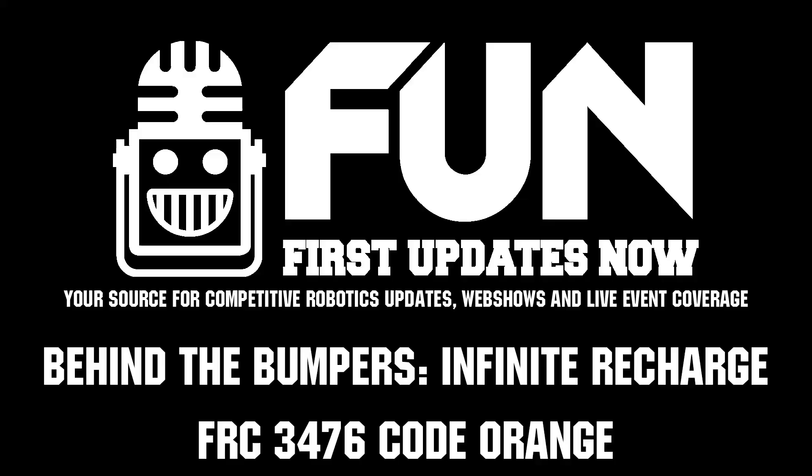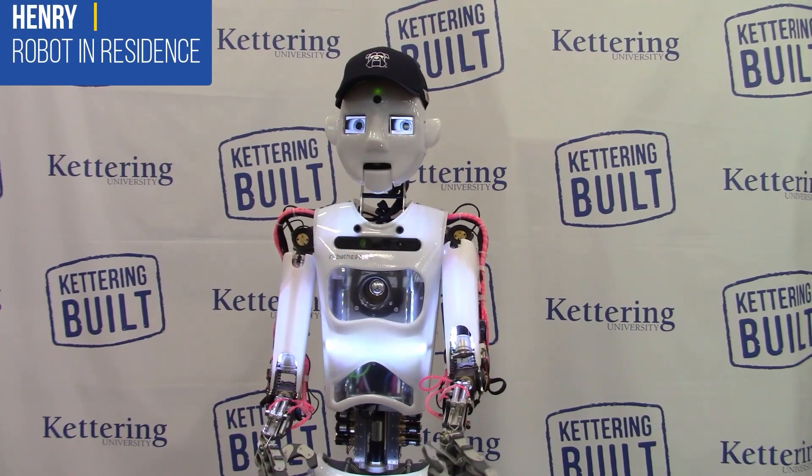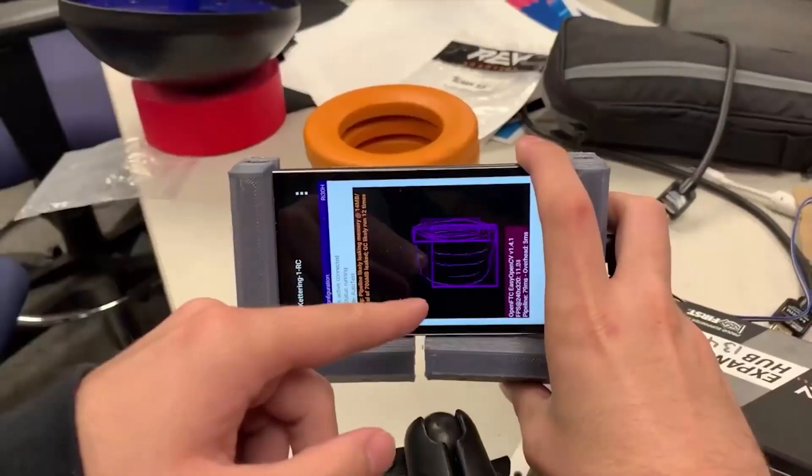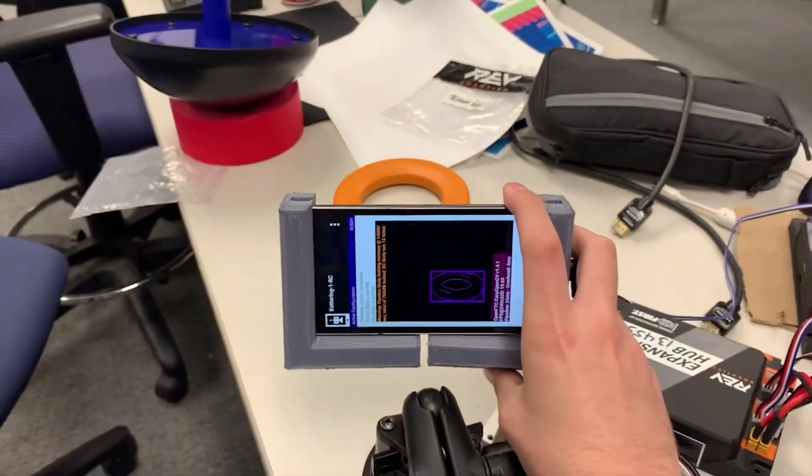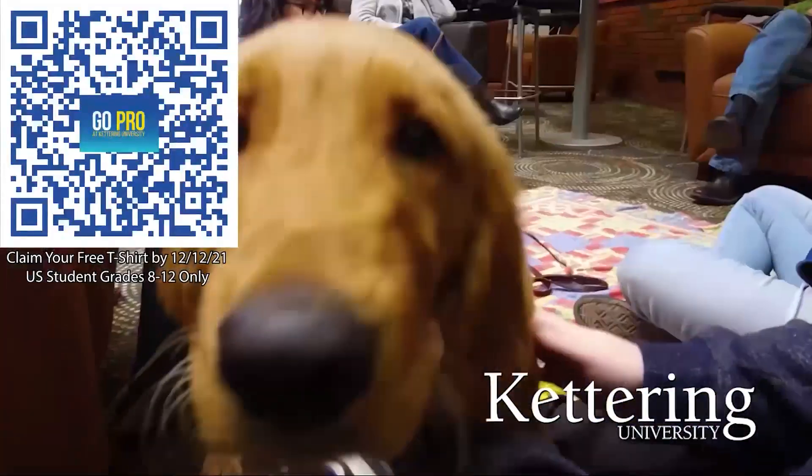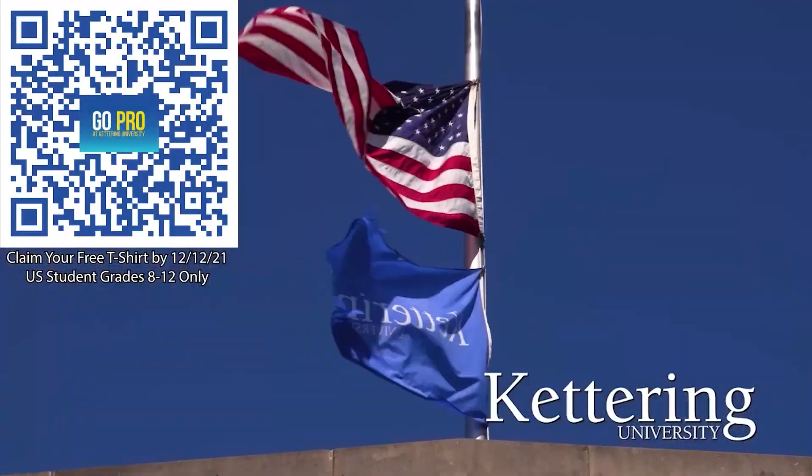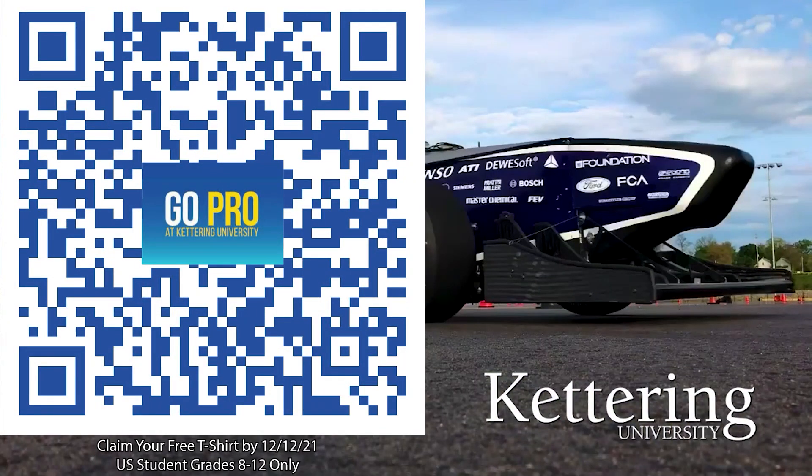Thanks to Kettering University for their support of this video. Don't just sit in class, Kettering University is the only school in the U.S. that allows you to work as an engineer your first year with their three month on three month off co-op programs. If you are a U.S. student grades 8 through 12, scan the QR code to stay up to date on info and events happening at Kettering and get a free Kettering t-shirt when you sign up by December 12, 2021.